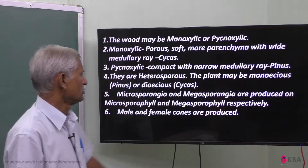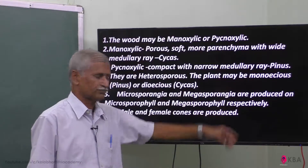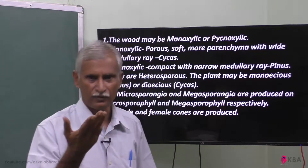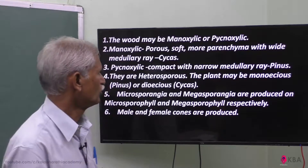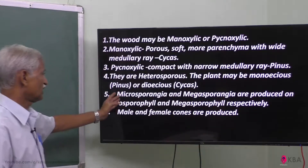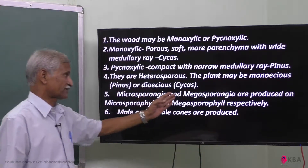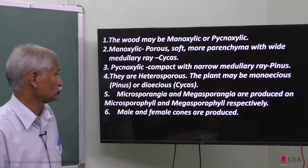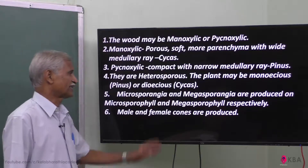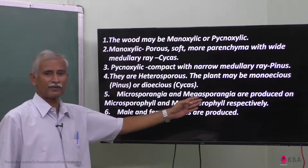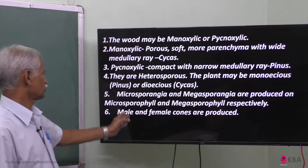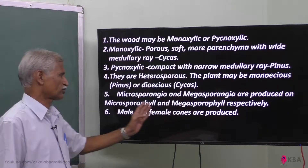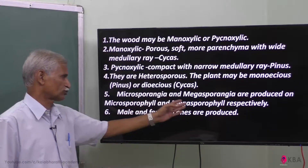The plant may be monoecious — bearing both male and female on the same plant, like Pinus — or dioecious, where male and female organs are on separate plants. Microsporangia and megasporangia are produced on microsporophylls and megasporophylls respectively.